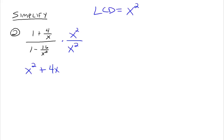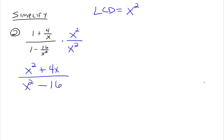4 over x times x squared simplifies down to 4x — if you need to go off to the side and work it out, please do that. Then the denominator of the bigger fraction: distribute x squared to 1 to get x squared, and then x squared times 16 over x squared — the x squared disappears, so you get x squared minus 16. So your denominator goes down to just x squared minus 16, and now we have a rational expression that's easier to deal with.